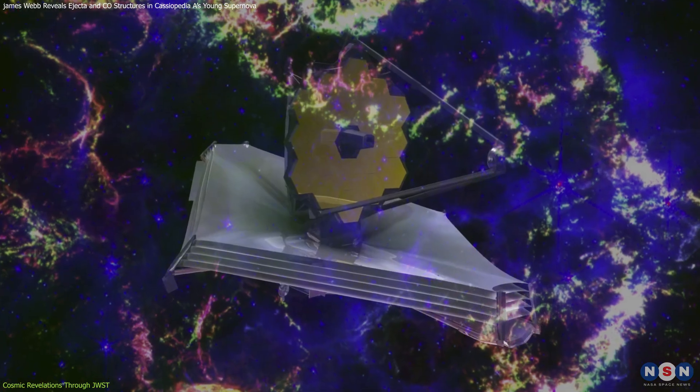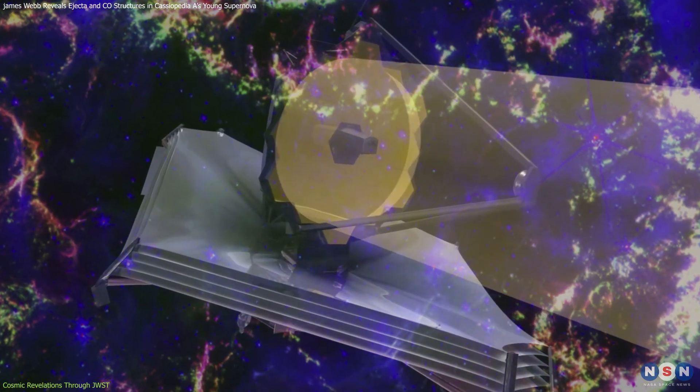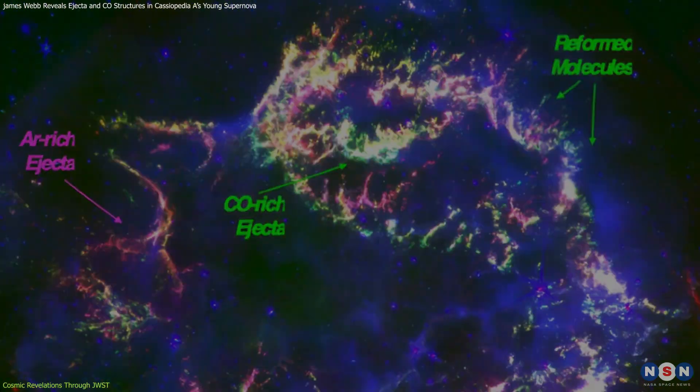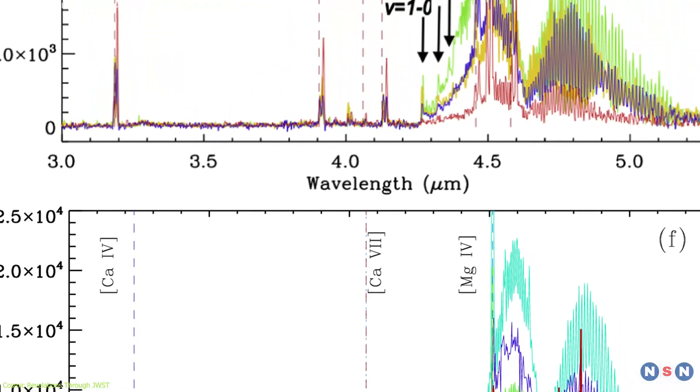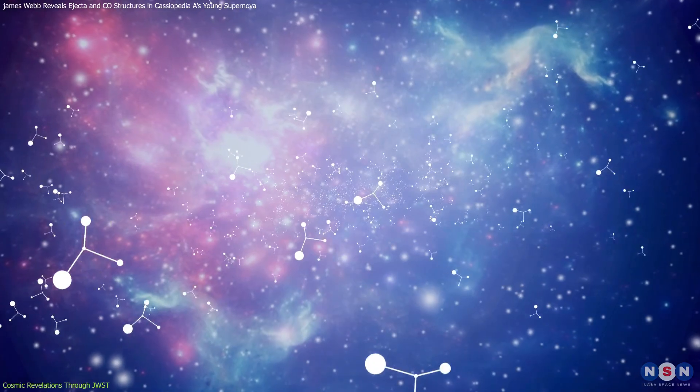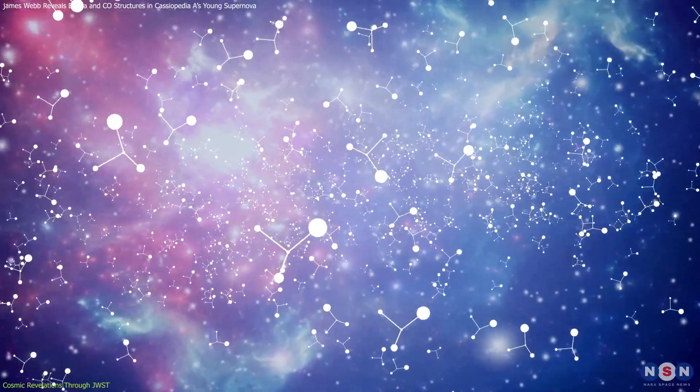Moreover, Webb's detailed spectroscopy provides insights into the chemical composition and distribution of elements within Cassiopeia A. The spectral data show sinusoidal patterns of CO's rovibrational lines, a signature that reveals the dynamics of molecules reforming under high-energy conditions.